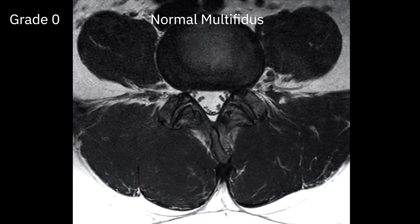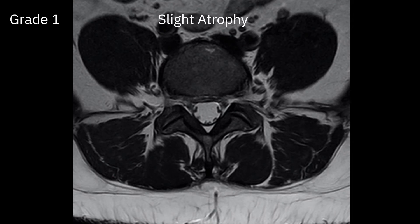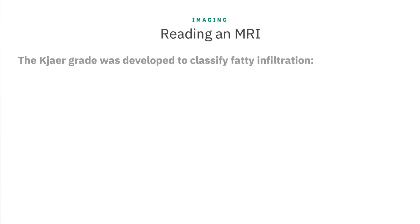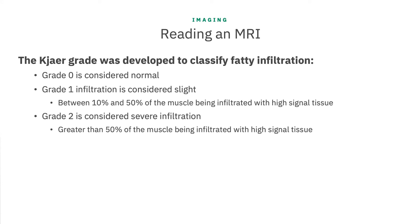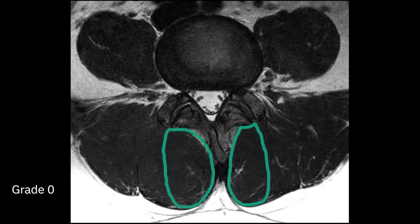One of the best studied and hallmark signs of a degenerated multifidus is fatty infiltration. Although it may be that the muscle is also dysfunctional without the accumulation of intramuscular fat, there is high quality literature that shows a positive association between intramuscular fat, multifidus dysfunction, and low back pain. Kager showed in a population of 412 adults from the general population that this was strongly associated with low back pain with an odds ratio of 9.2. They also developed a simple reliable way to classify fatty infiltration, conveniently named the Kager grade. Grade 0, such as in this image, is normal — you can see there is next to no high signal in the area we have previously defined as the multifidus.